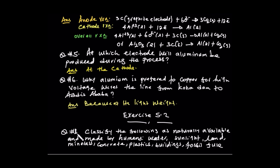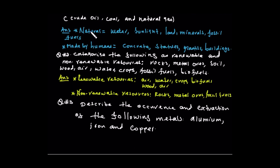Question number one of exercise 5.2: classify the following as naturally available and man-made. Natural resources include sunlight, land, minerals, and fossil fuels. Man-made resources include concrete, plastic, and buildings.